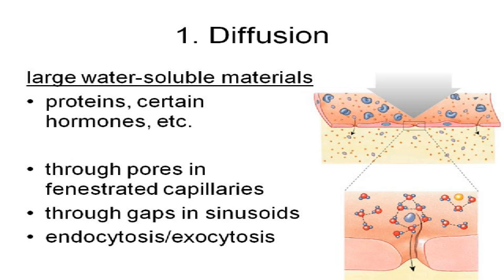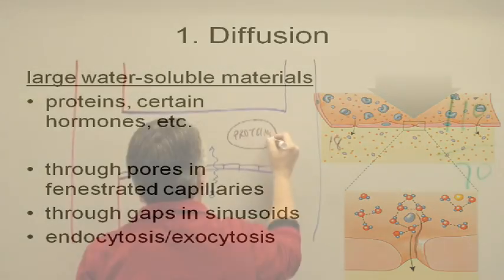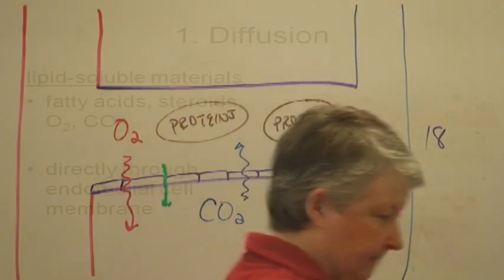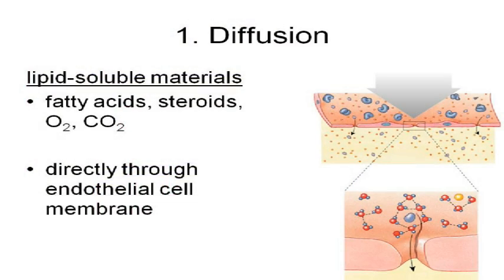Because most of your capillaries are continuous, large substances stay inside. Proteins stay in the lumen — they're only able to leave in certain areas like fenestrated capillaries or sinusoids, or you actually have to have endocytosis and exocytosis to get large proteins from inside to outside. Since most of your capillaries are continuous, proteins tend to stay inside the lumen and do not cross unless there is a particular reason for them to do so. Lipid-soluble materials have no problem crossing.